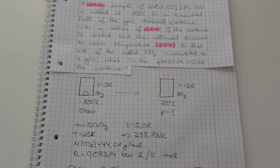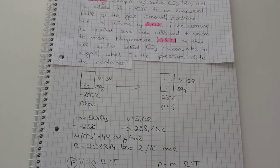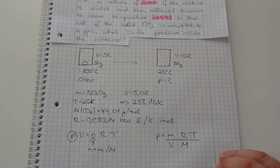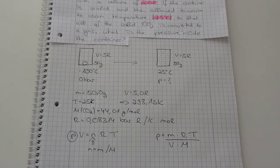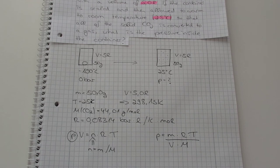And we need the gas constant 0.08314 bar liter per Kelvin per mole. So then we need the formula: pressure times volume equals the amount times the gas constant times the temperature. And amount is the mass divided by the molar mass.